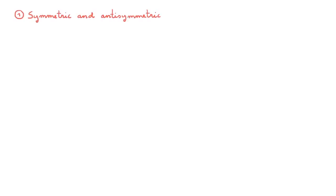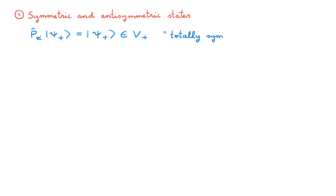Before we introduce the symmetrization postulate, let's start with a refresher about two prerequisite topics. Let's start with symmetric and antisymmetric states. If we act with any permutation P_alpha on a state psi_plus and we get psi_plus back, then psi_plus belongs to a subspace called V_plus and we say that it is a totally symmetric state.